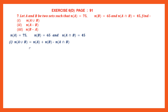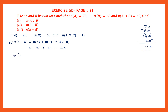Let's substitute the values. Cardinal number of A is 75, cardinal number of B is 65, and cardinal number of A intersection B is 45. So 75 plus 65 is 140, minus 45 gives us 95. The cardinal number of A union B is 95. This is how you work out sums when only cardinal numbers are given and elements are not given.